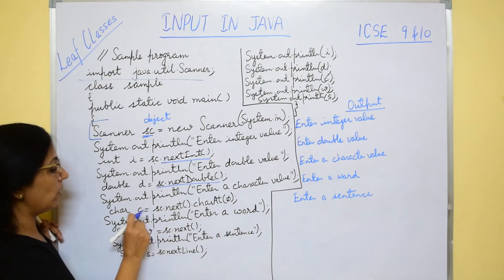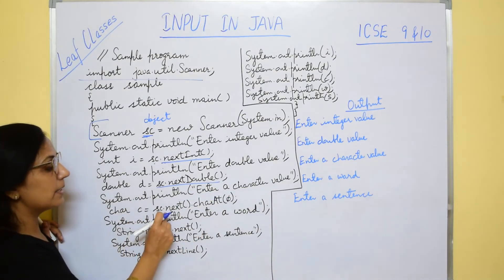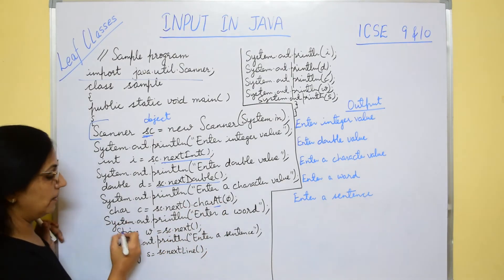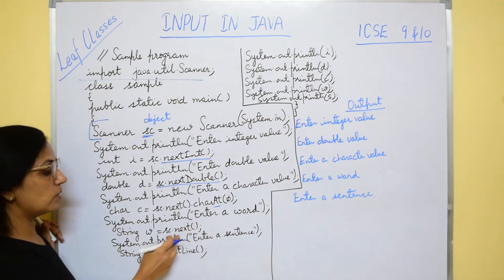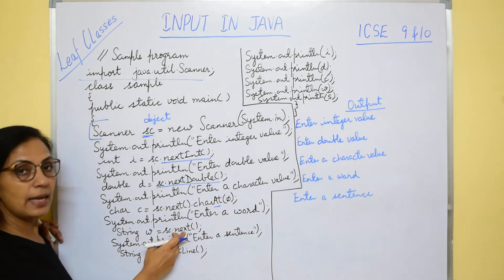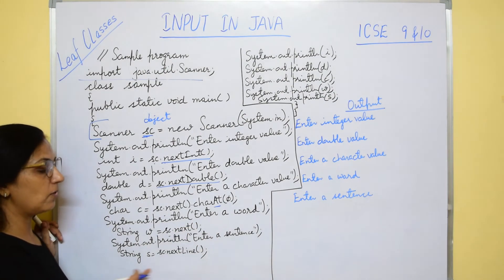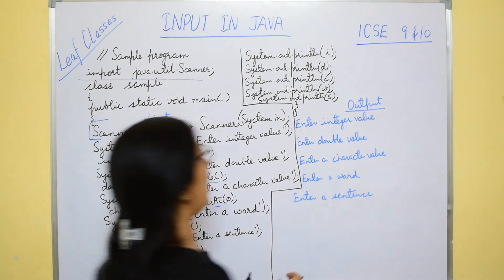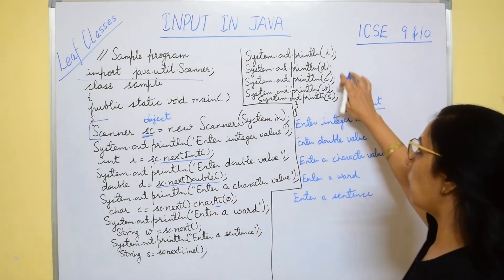For character value: char c = sc.next().charAt(0) — note the 'A' in charAt is capital. Then to enter a word we use next(), and for entering a full string we use nextLine(). After that, all values are printed.